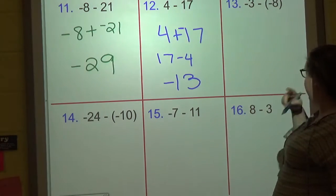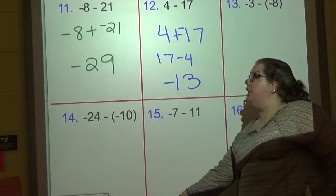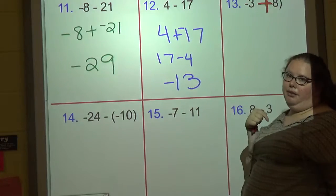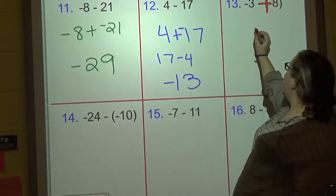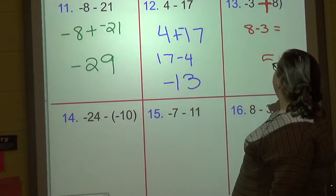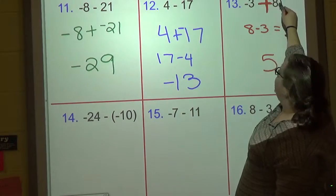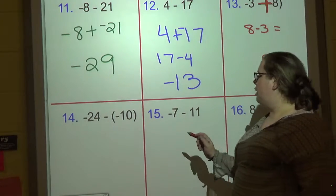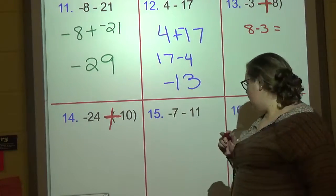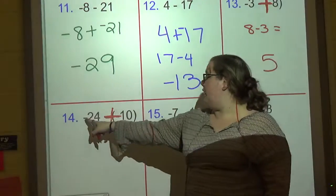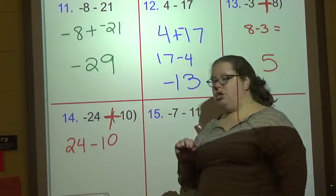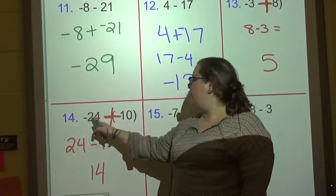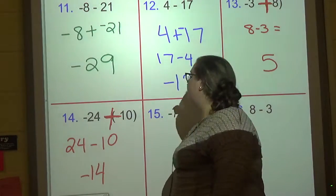Number thirteen: I see a double negative — turn that into a big plus. Negative three plus eight. Different signs — subtract: eight minus three is five. Eight is the bigger number and it's positive, so the answer is positive five. Number fourteen: double negative — connect, create a big plus. Negative and positive, different signs — subtract: twenty-four minus ten is fourteen. Twenty-four is the bigger number and it's negative, so the answer is negative fourteen.